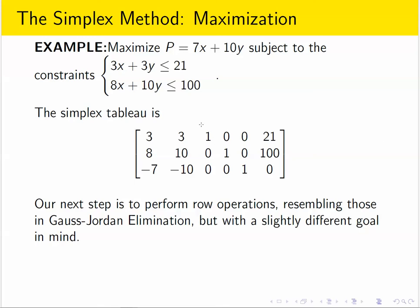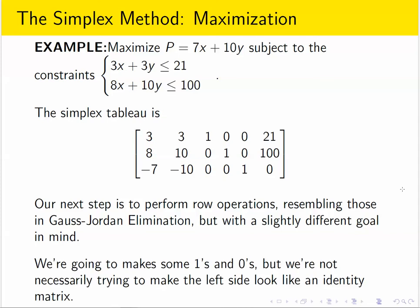We try to get ones here on the diagonal and zeros above and below those ones. Well that's not our goal for the simplex method. We're going to use the same operations, but we're not going to make the left side look like an identity matrix.